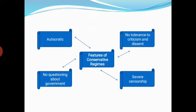The features of conservatism are: first, autocratic — a bossy way of ordering with absolute sovereignty; second, no tolerance to criticism and dissent; third, no questioning of the government; and fourth, severe censorship — the authority that works to protect secrets, stop anti-religious work, and maintain political power.